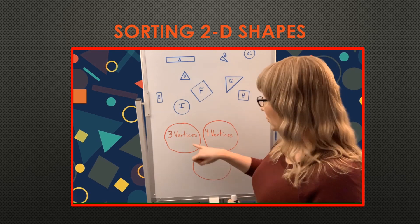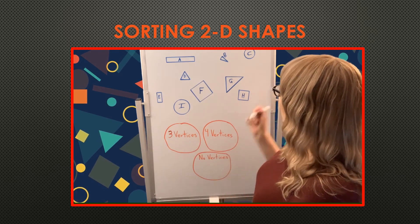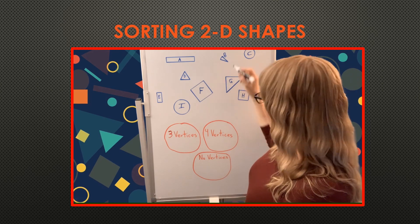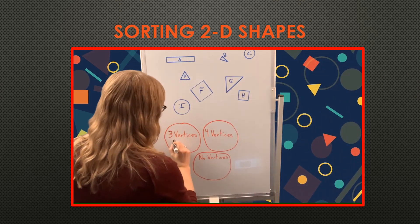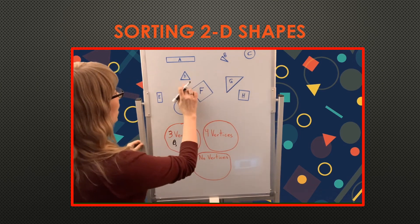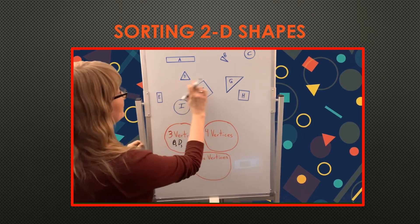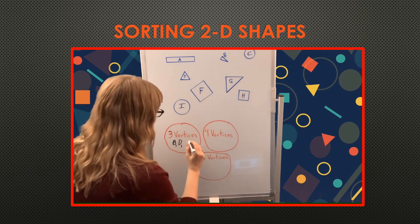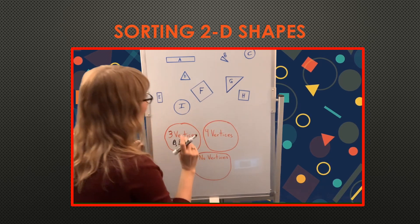So let's start with the three vertices. B has three vertices. D has three vertices.